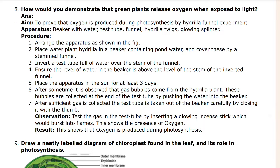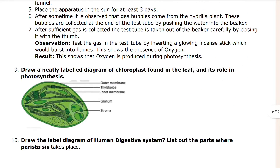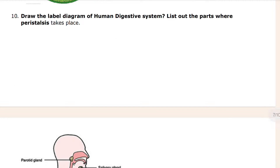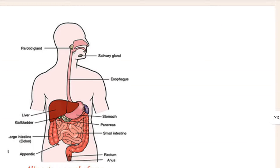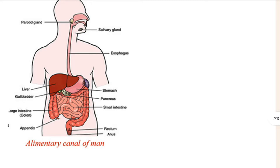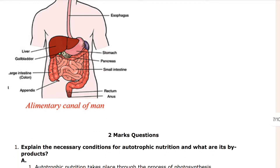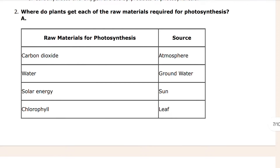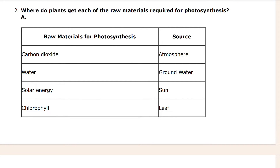Here you can see the 9th and 10th level diagram of chloroplast. Here is a picture of every gland and the enzyme system of the pancreas. And here are the two-mark questions. Actually, my health is not very good, so that's why.